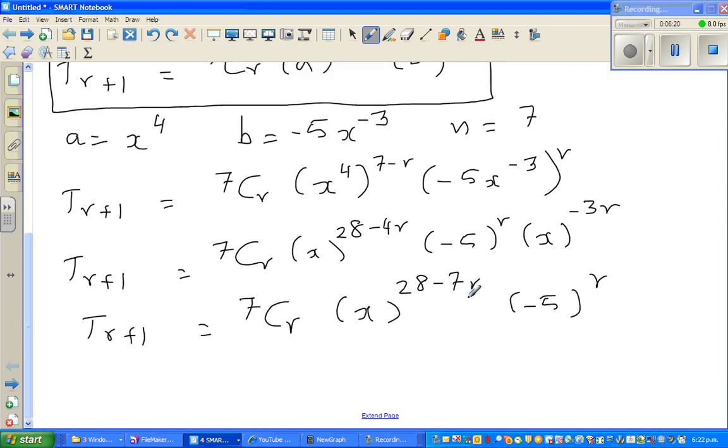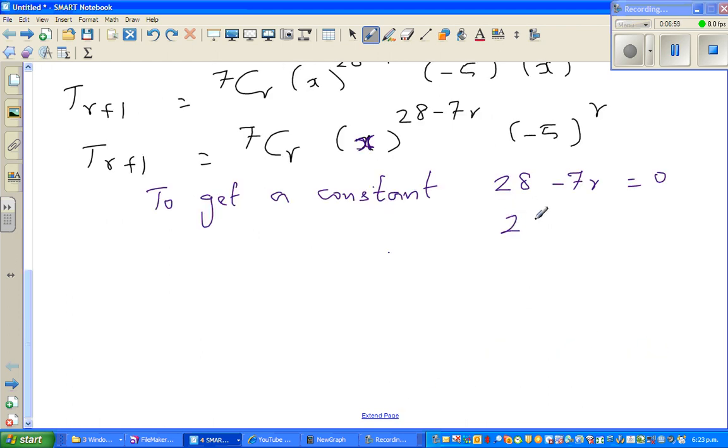If you want a constant term, you don't want a x term. So the power of x has to become what? x to which power gives you 1. That's what you want to think. So well you know that x to the power 0 gives you 1. So basically what I'm saying is you have to make this 0. So let me write that. To get a constant, the exponent of x has to become 0. You can say 28 minus 7r has to become 0. So this you can say 28 is equal to 7r. So now r is 4.